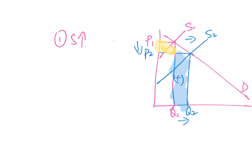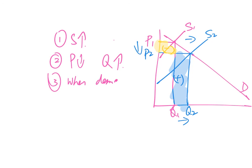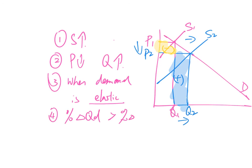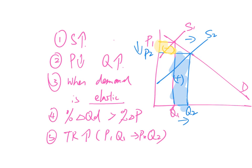After confirming the diagram is correct, write the elaboration. First, state the cause: supply increases. Second, discuss price and quantity: equilibrium price decreases, equilibrium quantity increases. Third, identify the demand type as elastic. Fourth, show the definition: elastic demand means the percentage change in quantity demanded is greater than the percentage change in price. Finally, conclude that total revenue increases, with the area changing from P1Q1 to P2Q2.